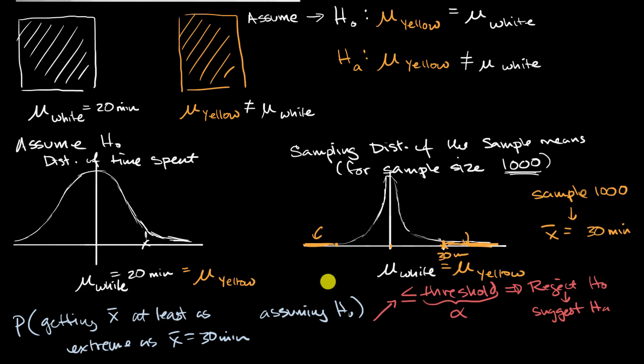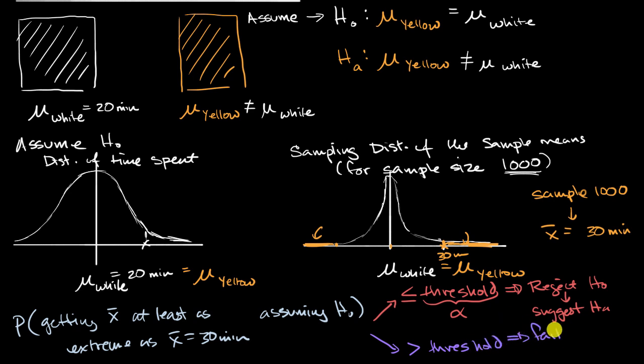If it's the other way around — if the probability of getting a sample mean at least as extreme is still reasonable, greater than your pre-specified threshold — then you fail to reject the null hypothesis. In future videos we'll go into much more depth, but this gives you a sense of how hypothesis testing allows science and all of us to start making inferences we can feel good about.